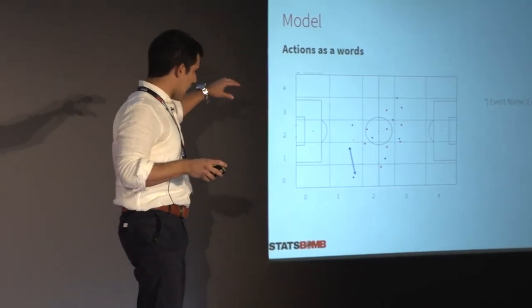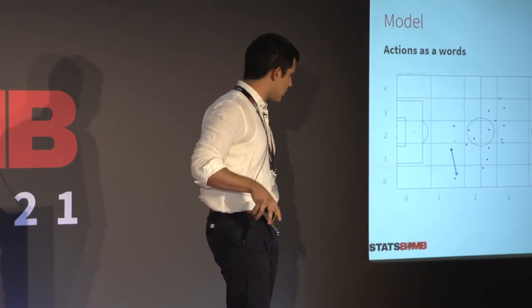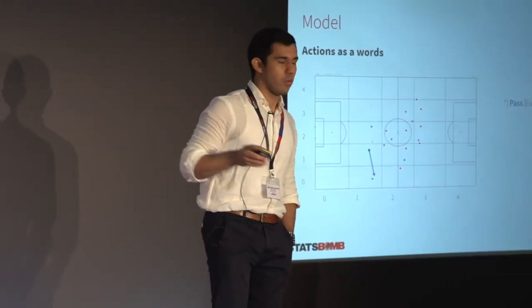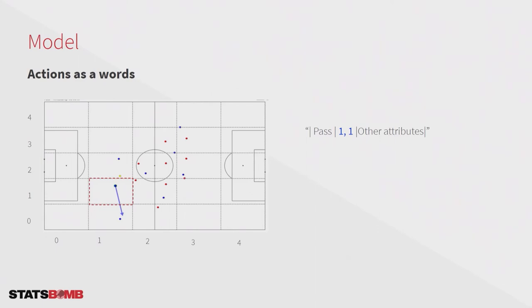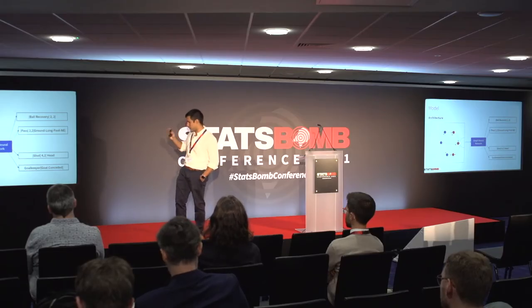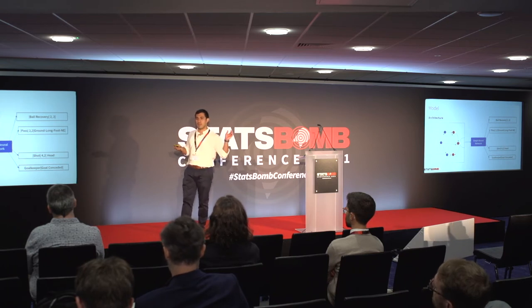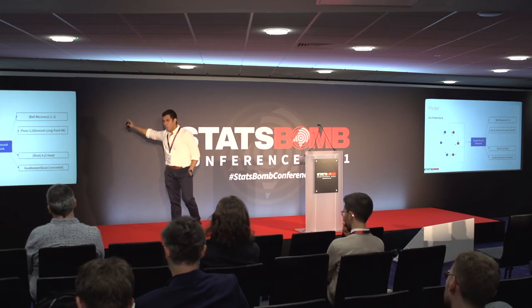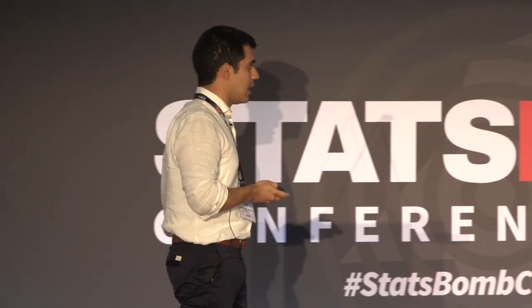For example, here we have a pass in the right side of the field. First I put 'pass,' then the location — in this case the pass starts at square 1.1 — and finally the attributes: it was a ground pass with medium length, executed with the foot in the east direction. We follow this structure for all actions. The total vocabulary — the number of different actions found following this structure — was around 6,000 distinct actions. We then train our model on all the StatsBomb 360 data to predict the context of each event and obtain our embeddings.